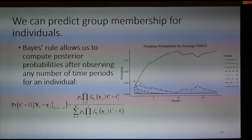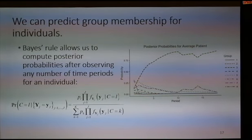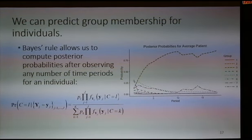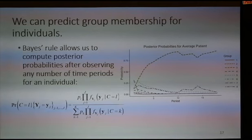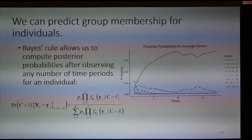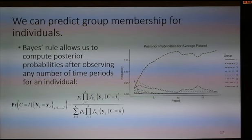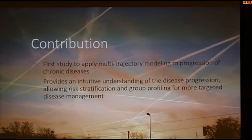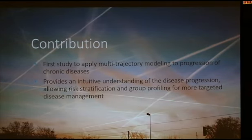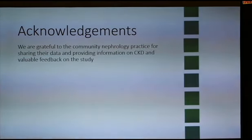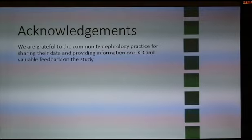We can also form predictions for individuals: given their features and trajectories up to a certain point in time, we can predict which group they will end up in. After just a few periods, we can be fairly certain how they will do. To sum up, this is the first study applying multi-trajectory modeling to the progression of chronic diseases. We hope the model helps provide an intuitive understanding of disease progression, enabling risk stratification and group profiling for more targeted disease management. I'd like to acknowledge the nephrology practice we worked with and thank my advisors.